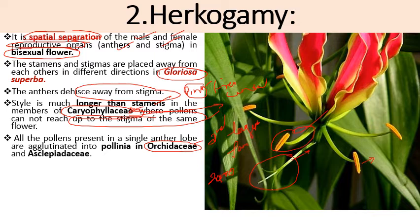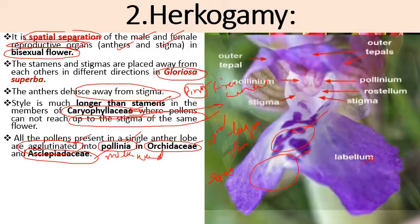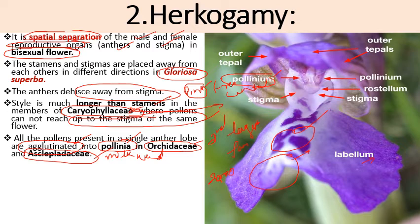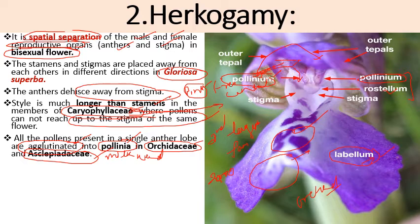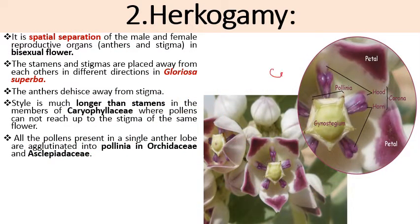In both Orchidaceae and Asclepiadaceae (the milkweed family), pollen grains are agglutinated and form a single structure known as pollinium — all pollen grains transfer as a single unit. The orchid flower bears unique structures like the labellum, rostellum, and pollinium. These are unique to Orchidaceae. Insects carry the pollinium to another flower; the pollen grains cannot fertilize the stigma of the same flower, making this again an adaptation to ensure cross pollination.